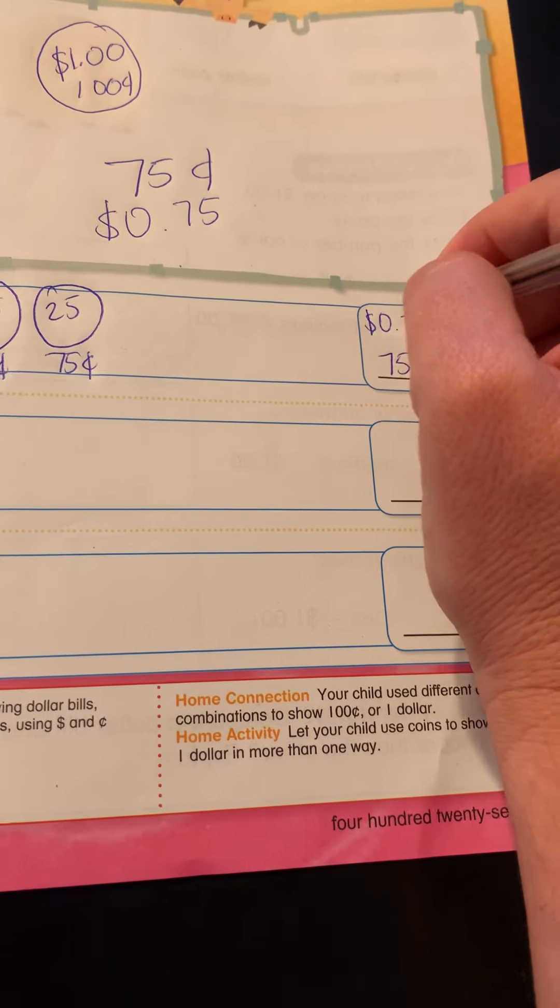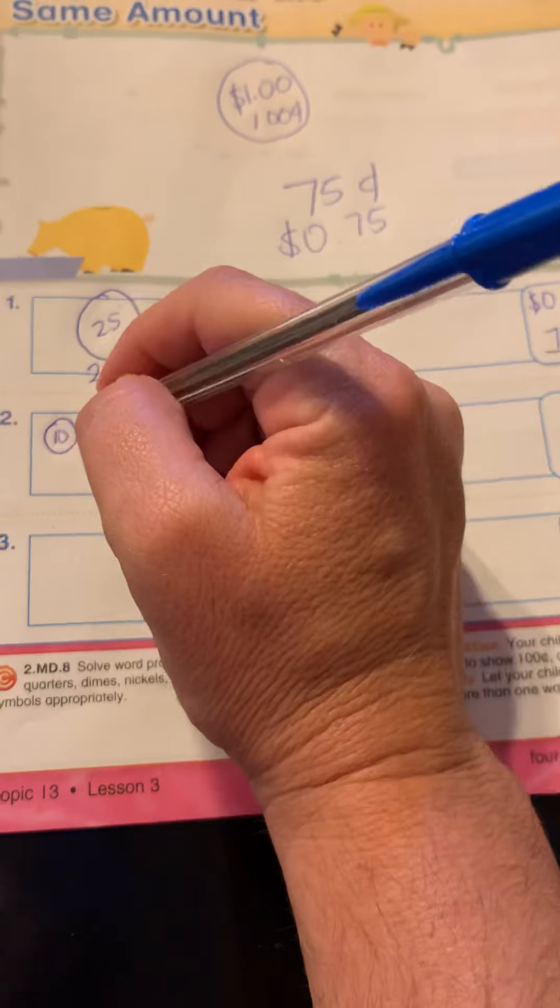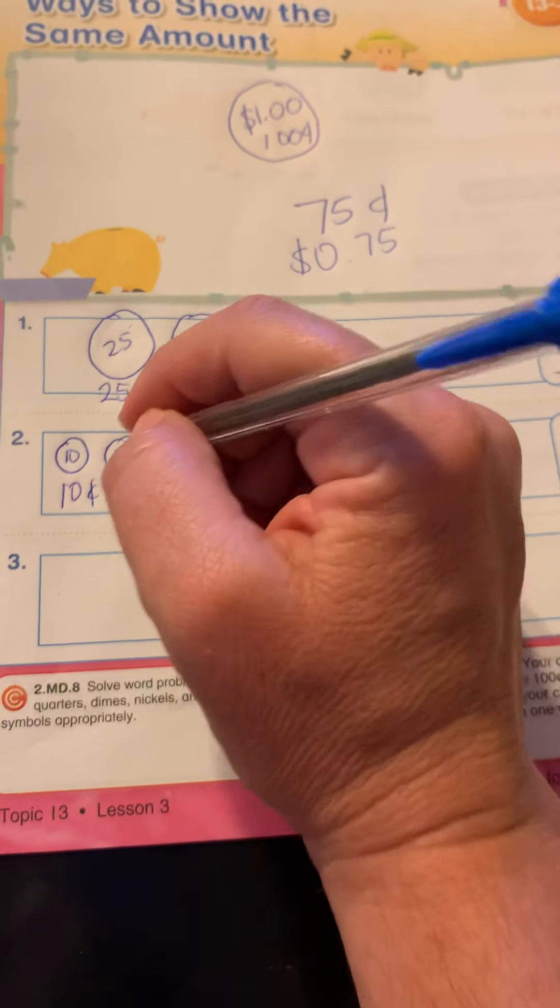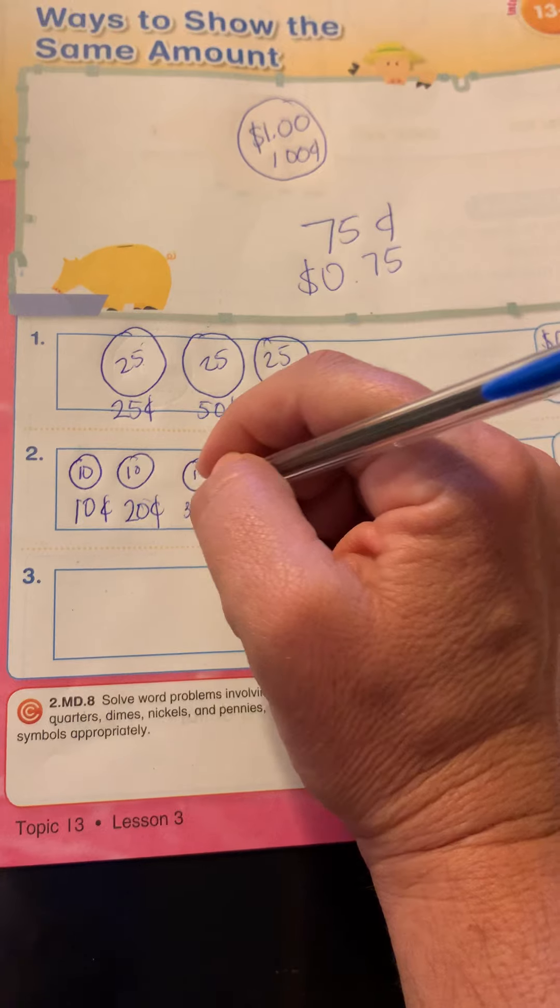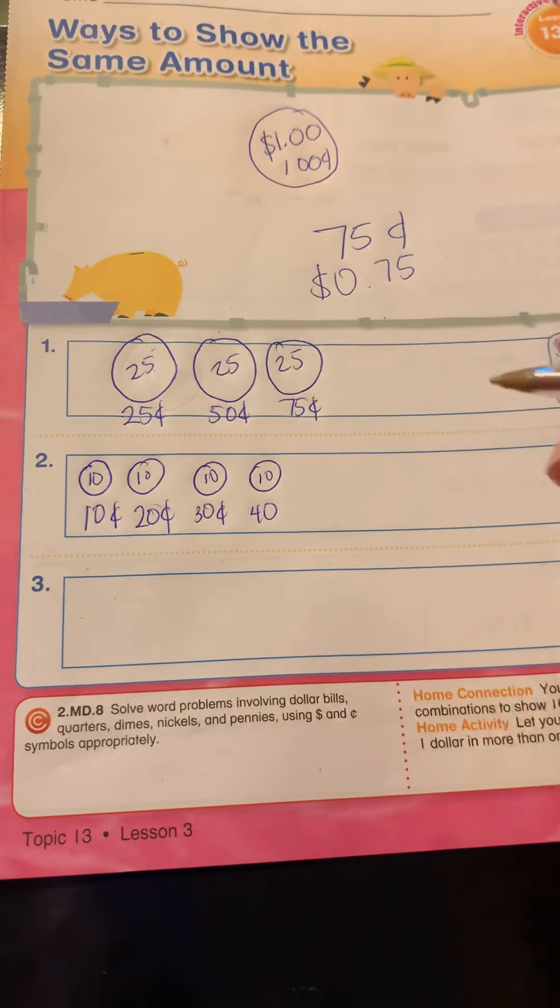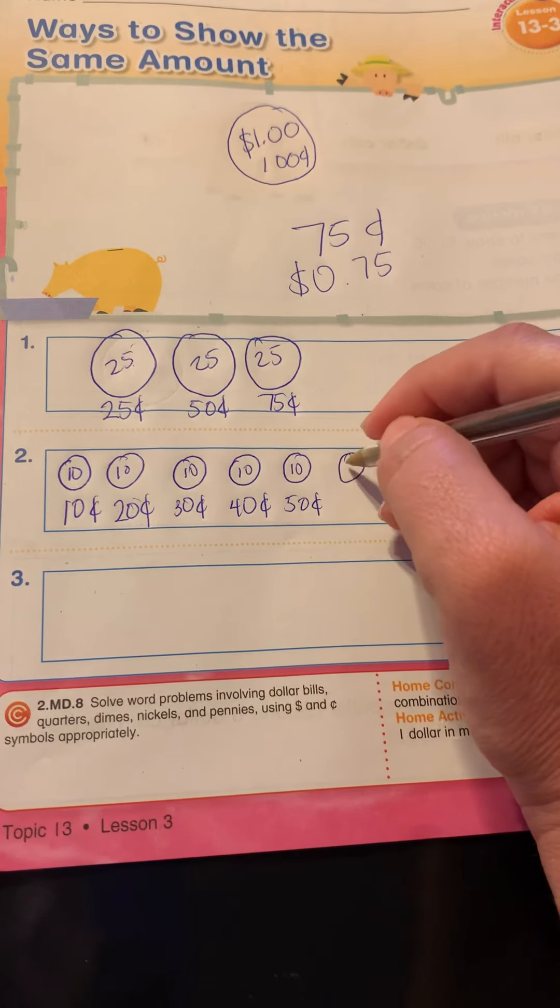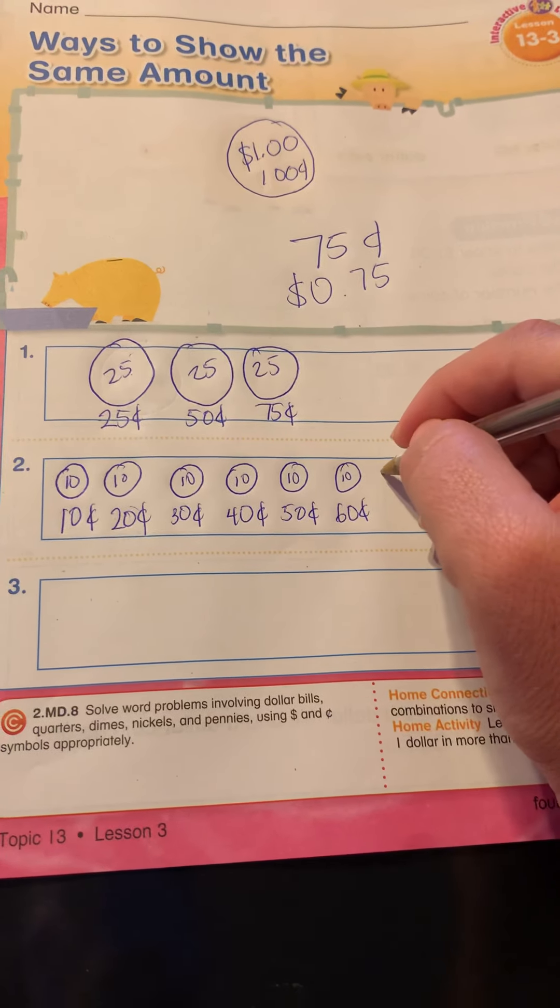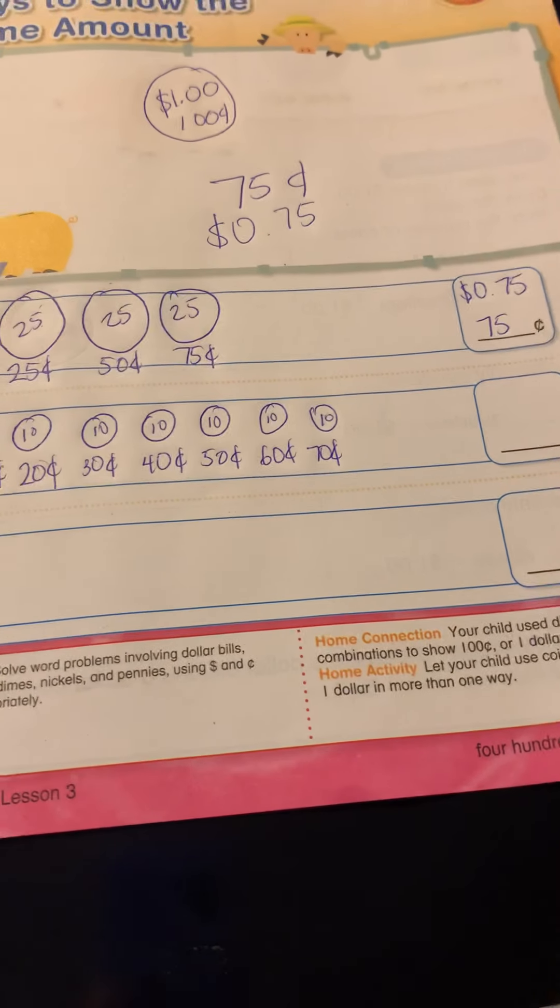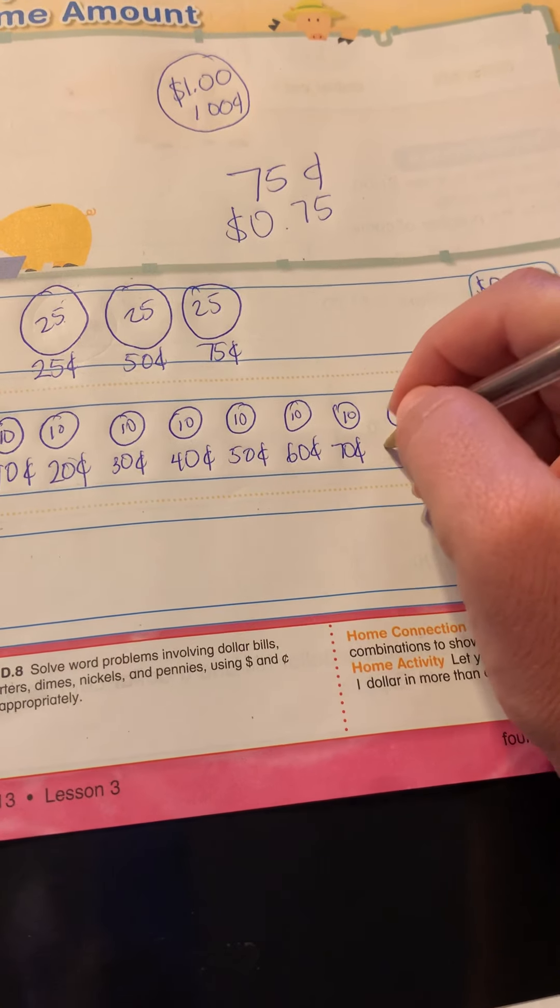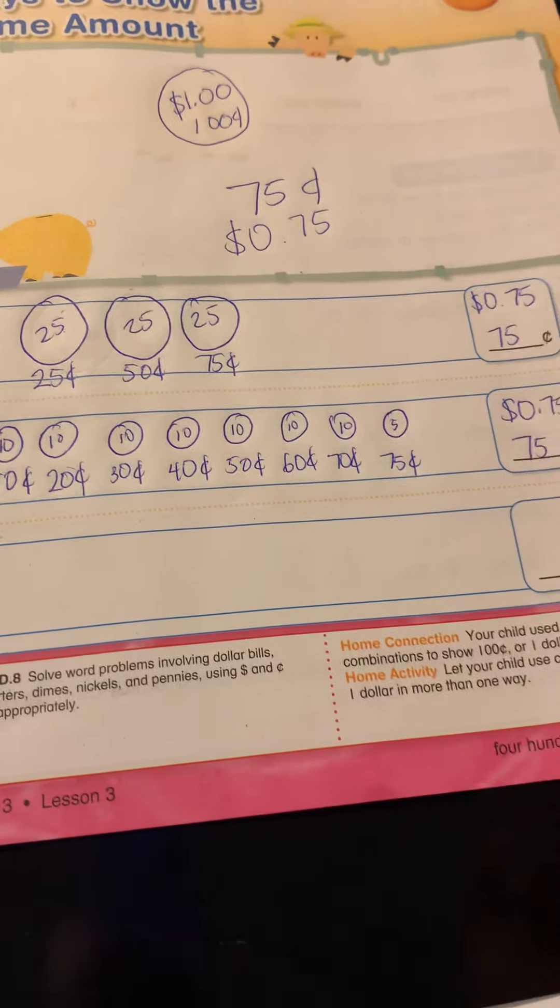Okay, so another way to do it, I can do dimes. So I could say 10 cents, another dime which is 20 cents, another dime 30, 40, 60, 70. Can I do another one and go on to 80? I can't because I want to equal 75, so how do I get there? Good, I can just do a nickel. 75 cents, so that's another way that I can make 75 cents.